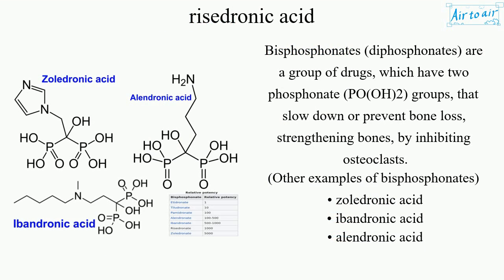Bisphosphonates, or diphosphonates, are a group of drugs which have two-phosphonate groups that slow down or prevent bone loss, strengthening bones by inhibiting osteoclasts. Other examples of bisphosphonates: zoledronic acid, ibandronic acid, alendronic acid.